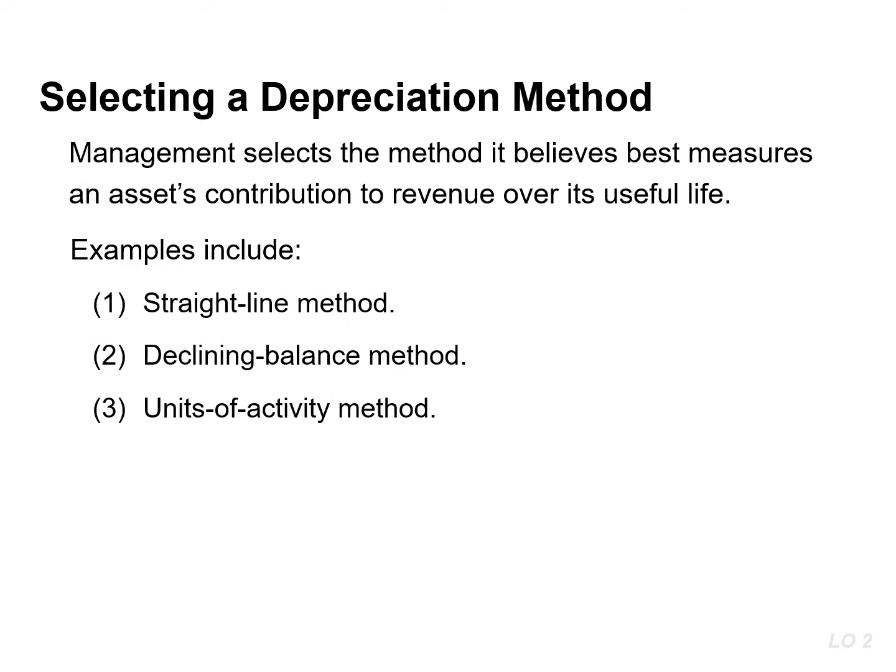Depreciation is generally calculated using one of three methods – straight line, declining balance, or units of activity. Each of these methods is acceptable under GAAP. These methods work differently in how they derive the annual depreciation amount, but they all result in the same total depreciation over the total life of the asset. Once a method is chosen, it should be applied consistently over the life of the asset.